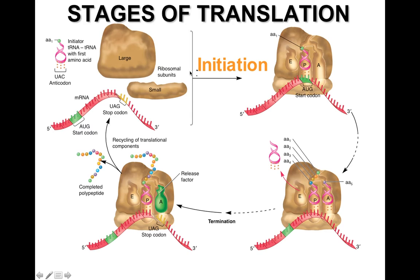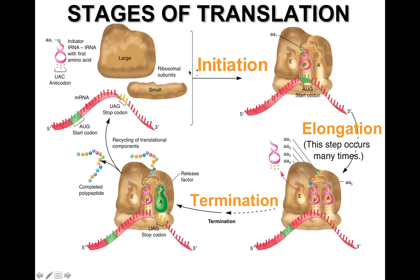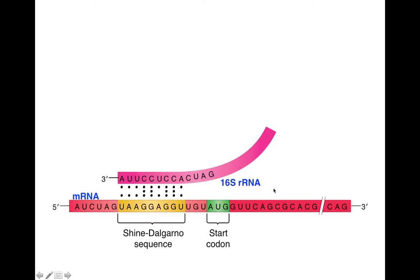There are three stages of translation: initiation, elongation, and termination. Initiation begins when several different components come together — the small ribosomal subunit and the messenger RNA bind first, followed by the initiator tRNA, and then the large ribosomal subunit joins to create an initiation complex with a tRNA at the start codon in the P site of the ribosome.